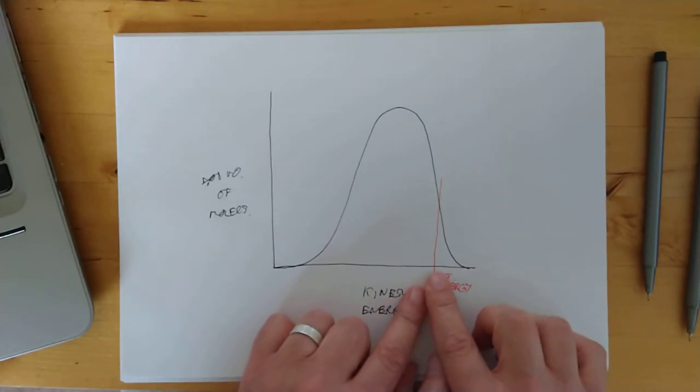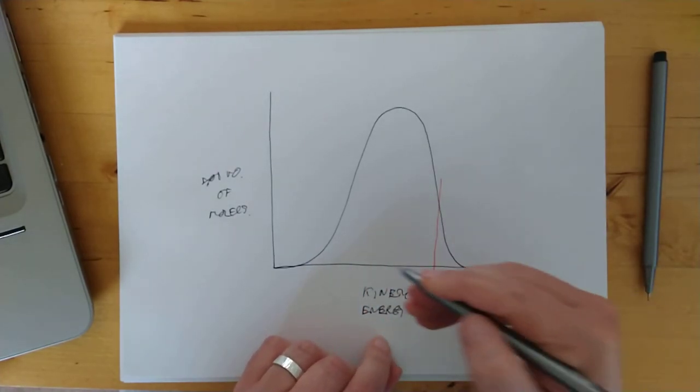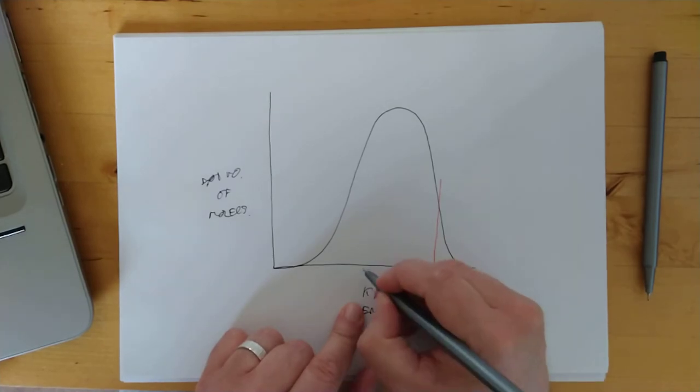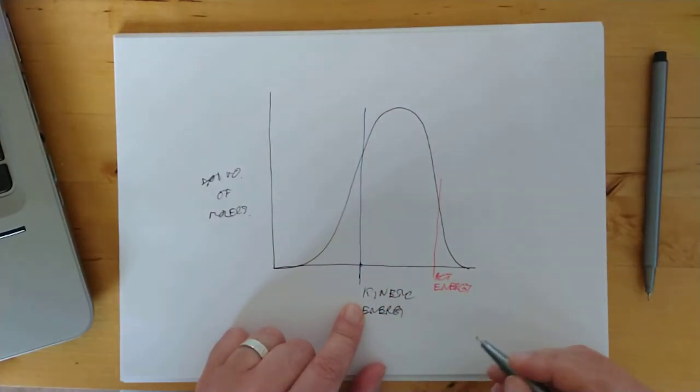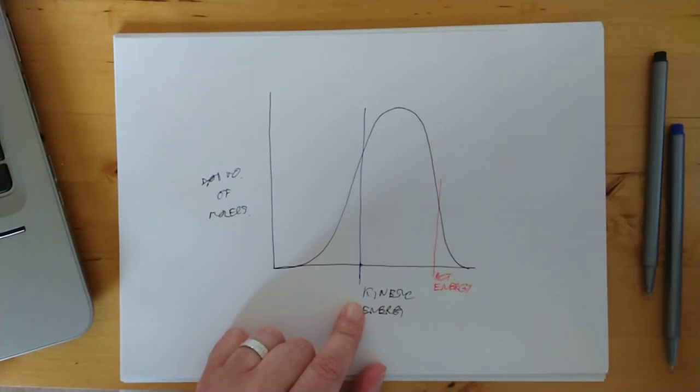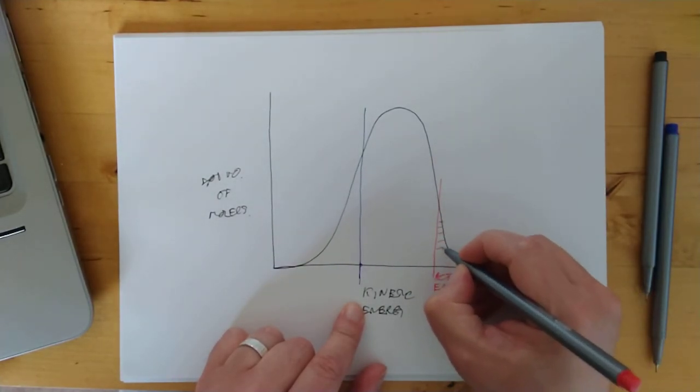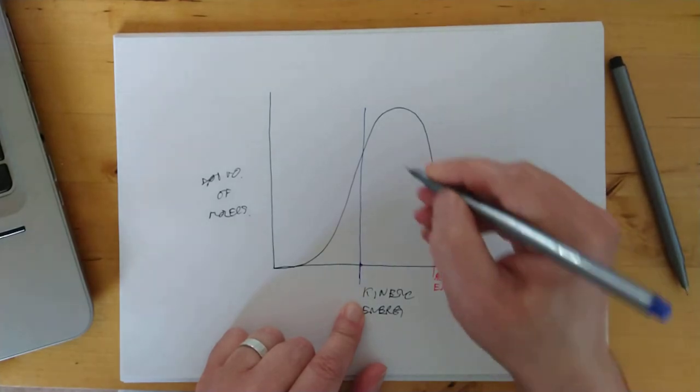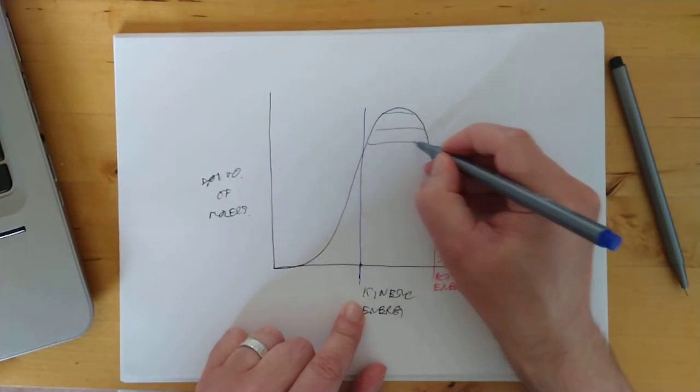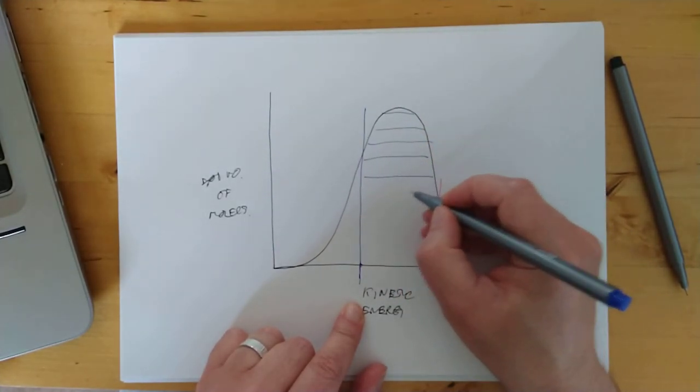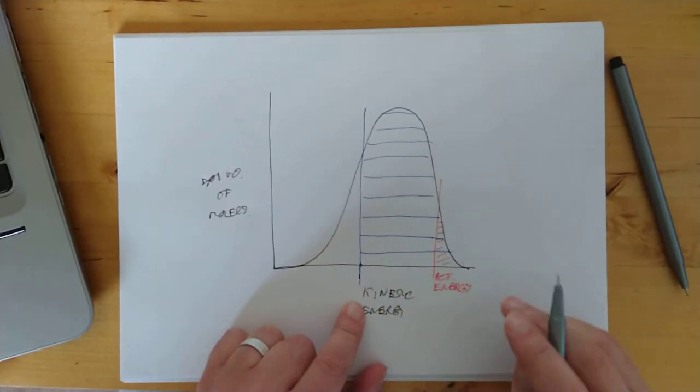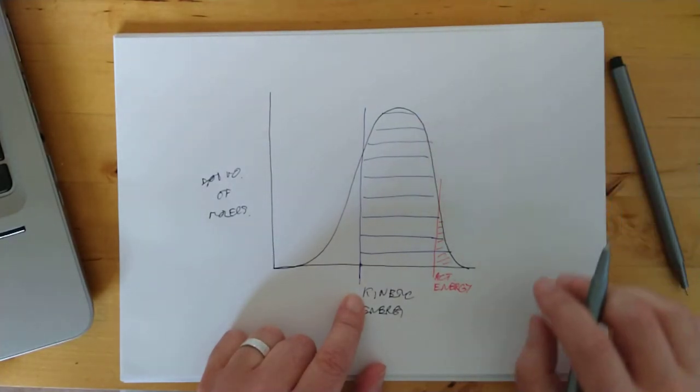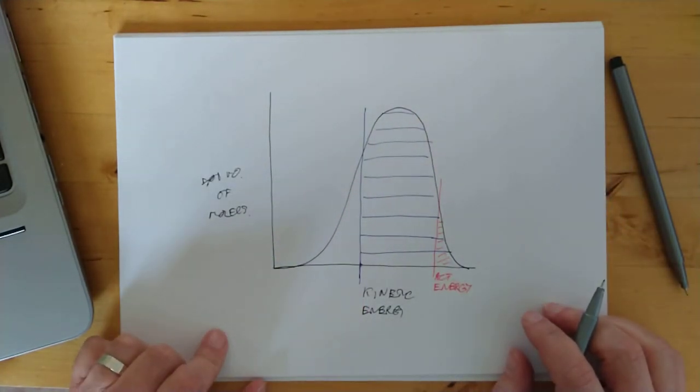Okay, so if we reduce, say we halved the activation energy down to a bit there. Wow, okay. Now that was the number of molecules before. This is the number of molecules now. That's why catalysts are so beloved by industry and by biological systems keeping us alive, because they can hugely increase the reaction rate.